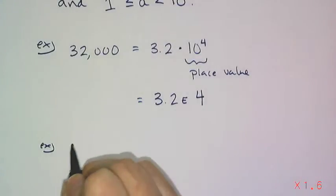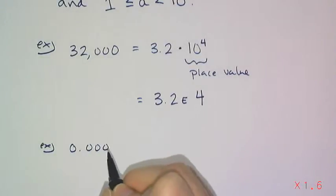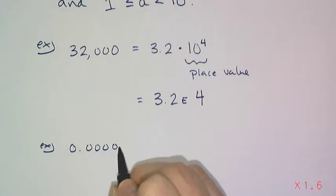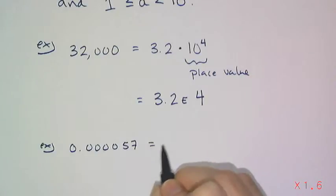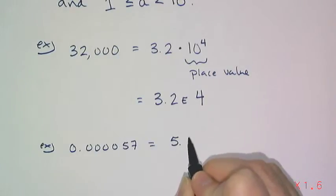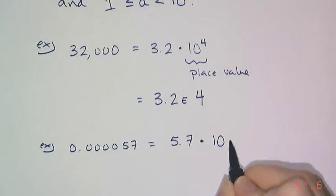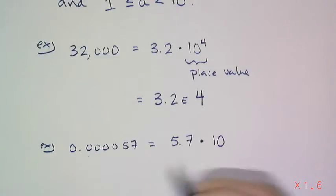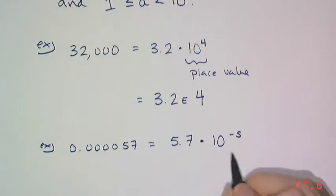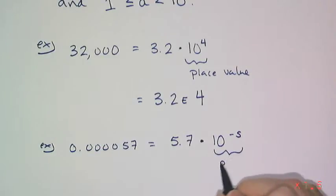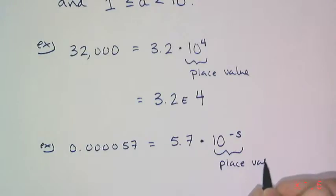If you have a really tiny number, meaning a number really close to zero, you can also write that in scientific notation. And the only difference is that you have a negative exponent, in this case negative 5. And this 10 to the negative 5, once again, is the place value of that 5.